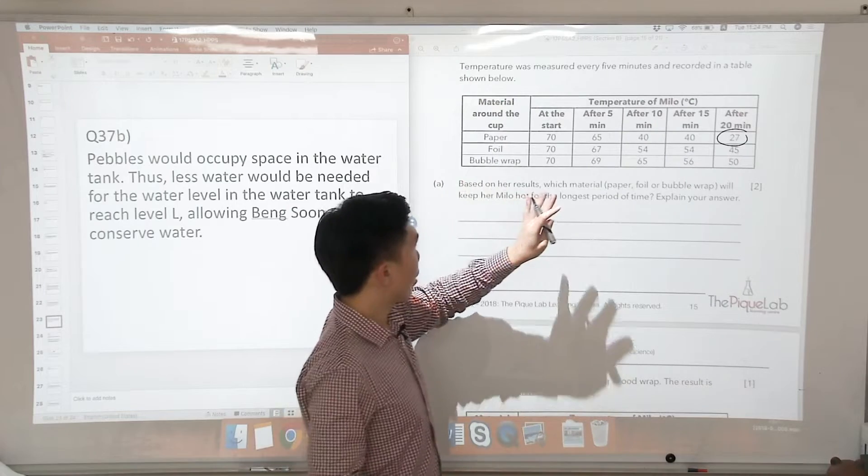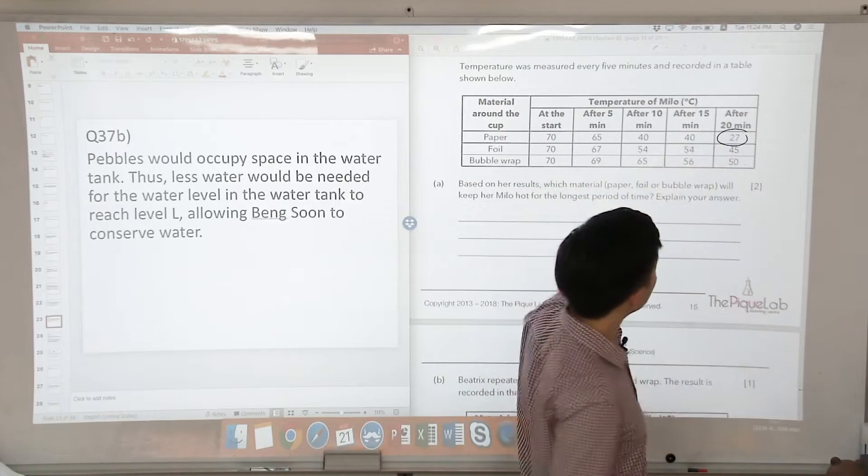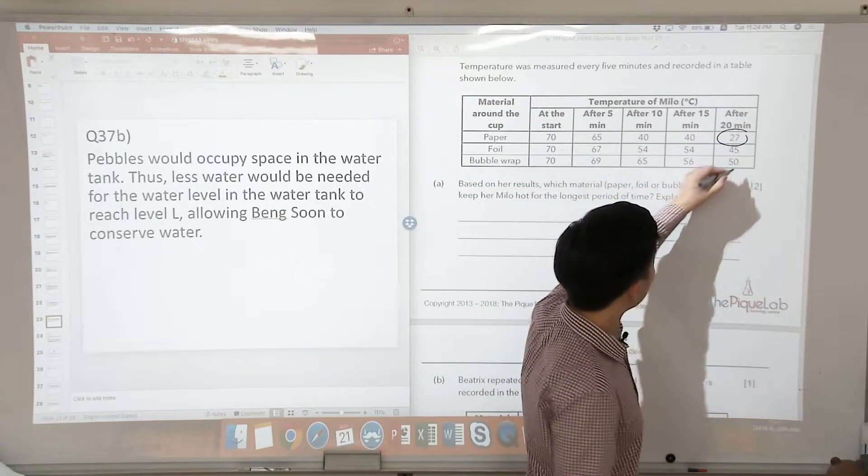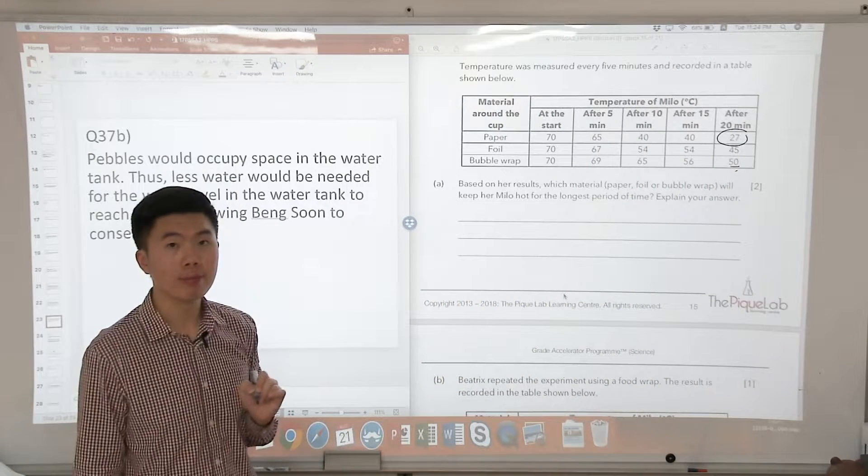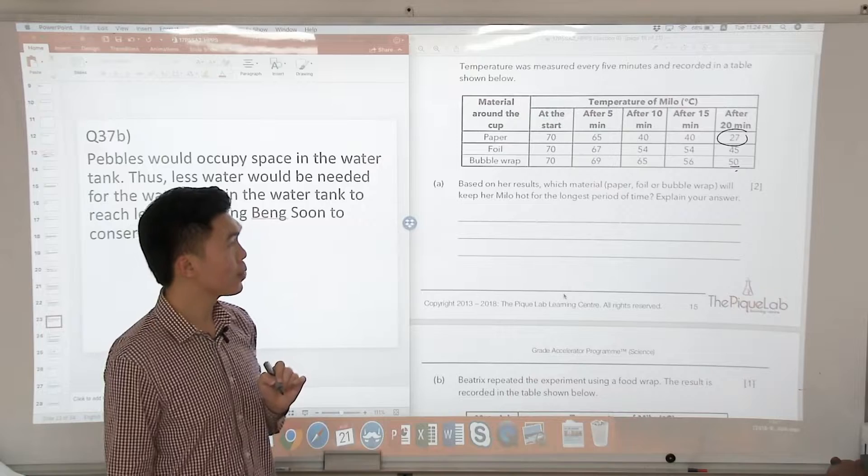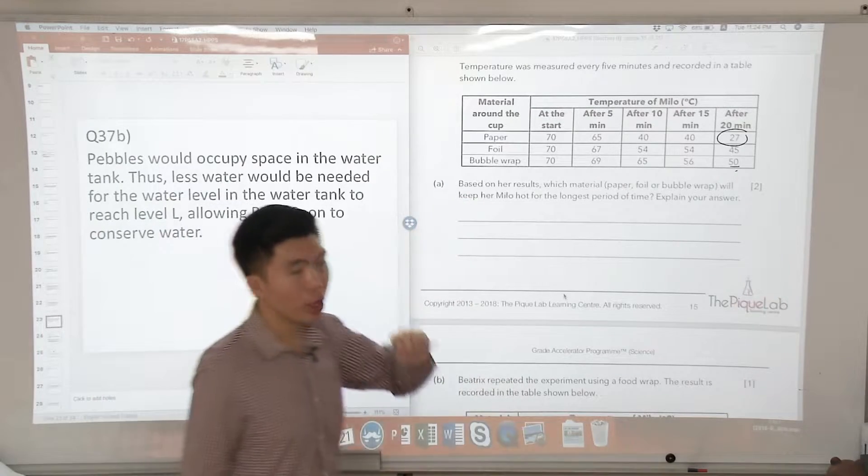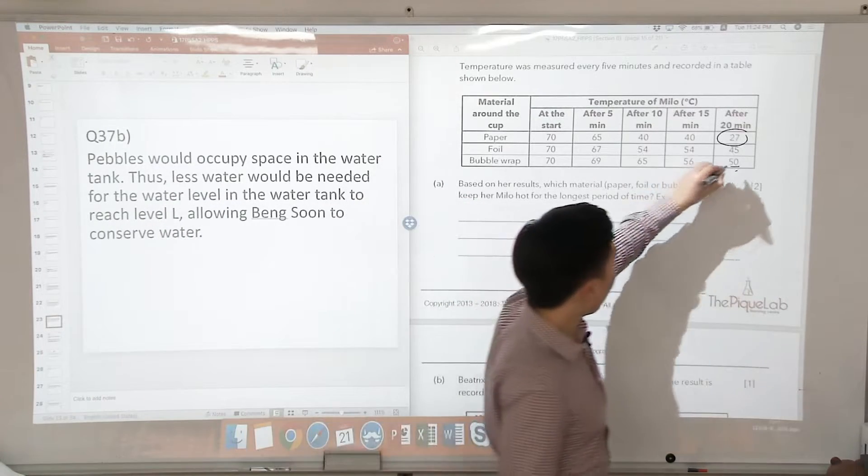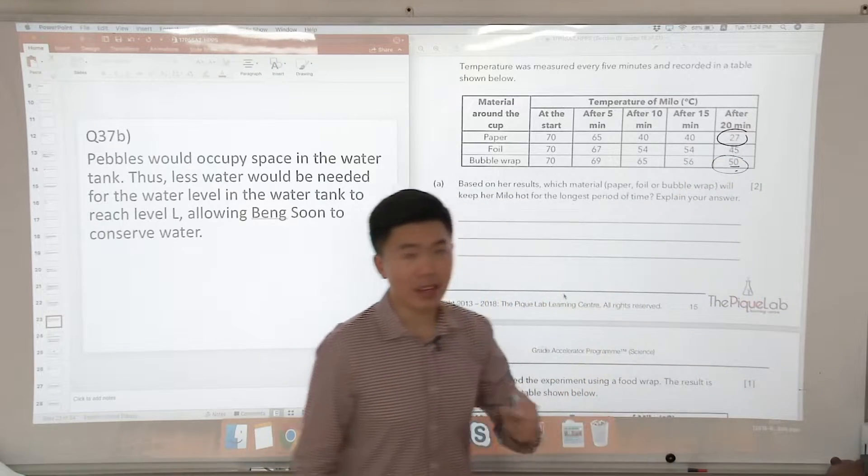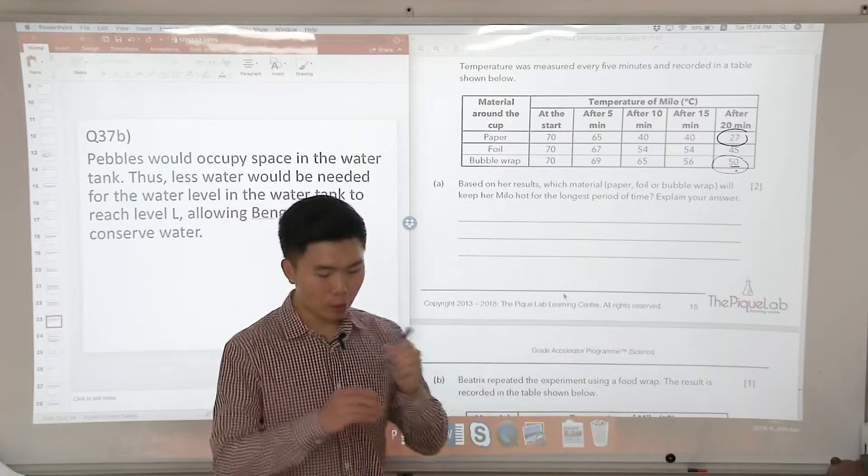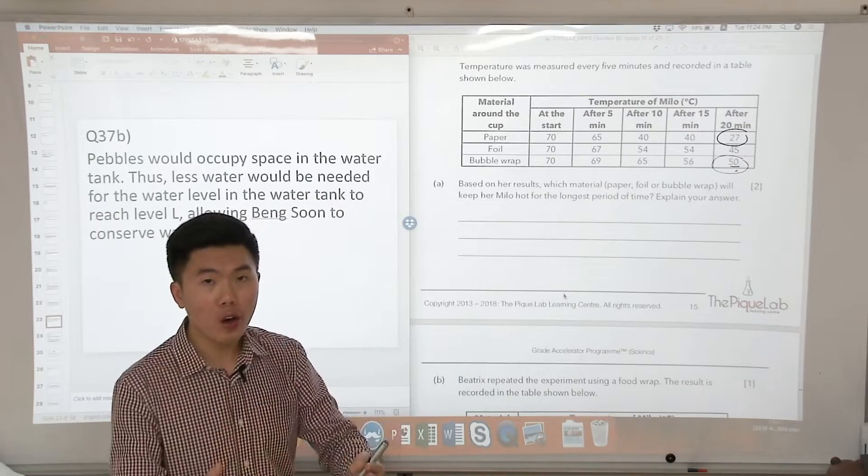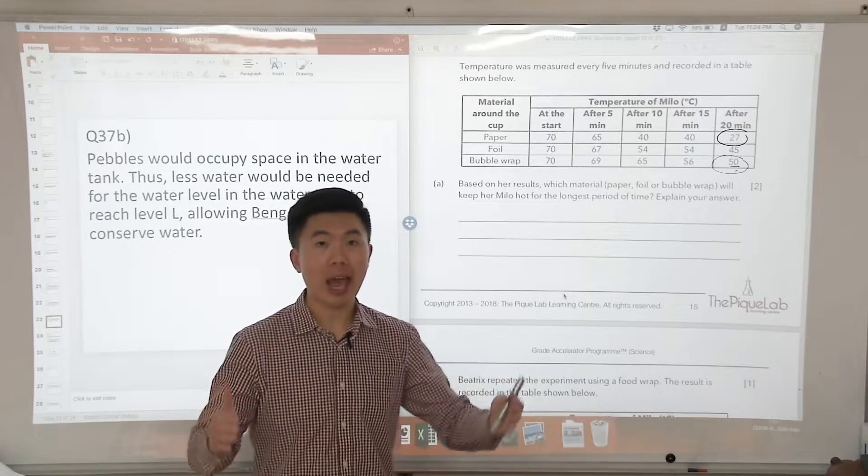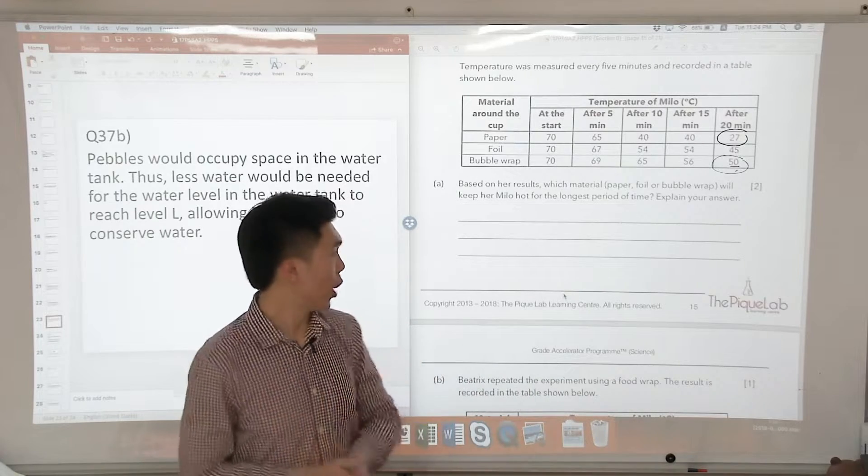Now what is the other one? Bubble wrap. The bubble wrap after 20 minutes, it was at 50 degrees Celsius. So what does this tell us? The temperature after 20 minutes was the highest. So this means that heat from the hot Milo in the cup that was wrapped with bubble wrap was lost to the cooler surroundings at the slowest rate.